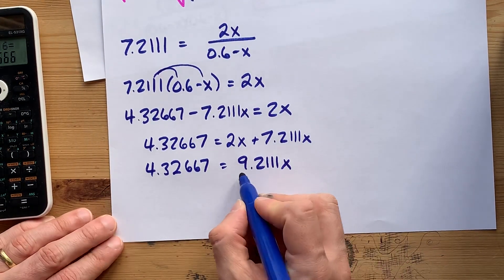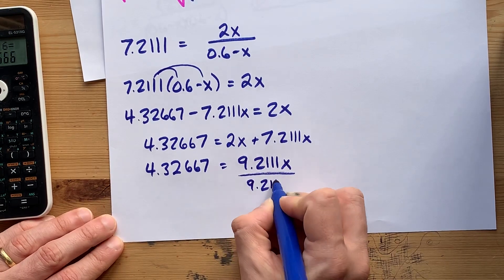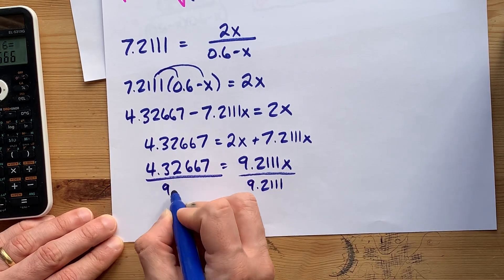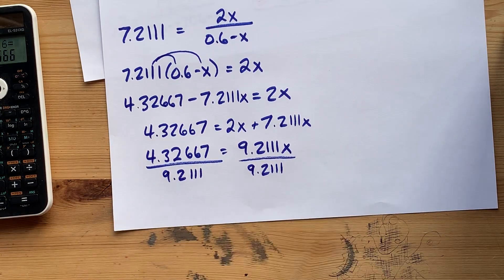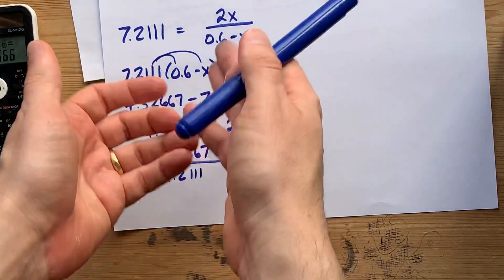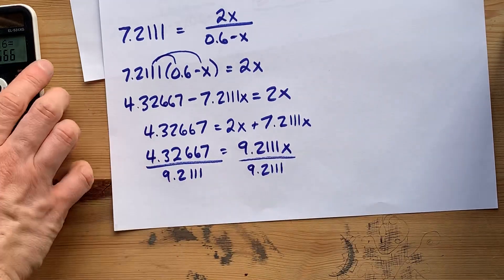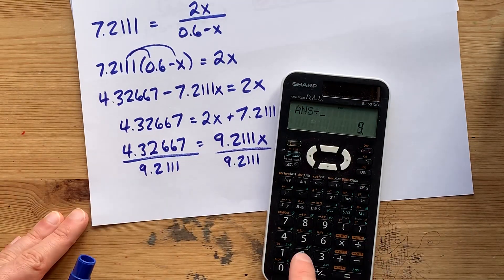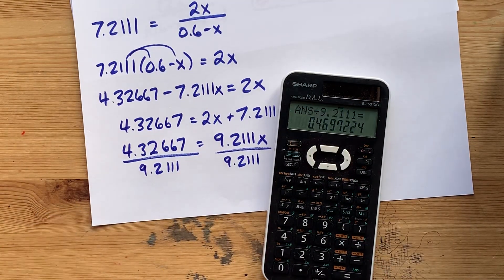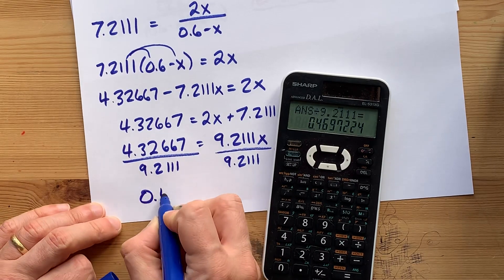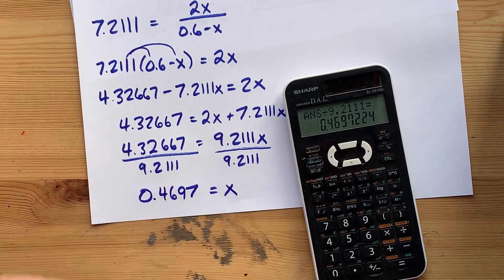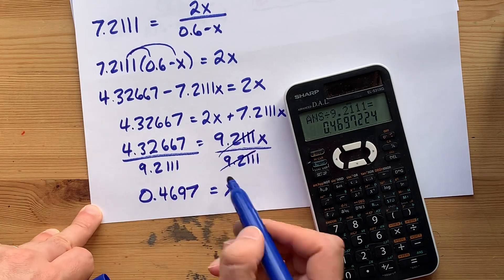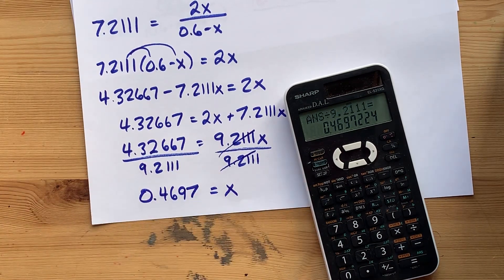This is all, I would call it easy algebra, but if you're not feeling too great at math, don't worry, what I'm doing here will always be what you do if you can square root both sides. Divide it by 9.2111, I end up with 0.4697 as X. That's me dividing both sides by 9.2111 to cancel it out.